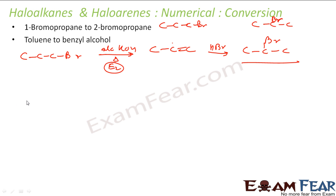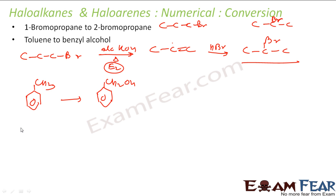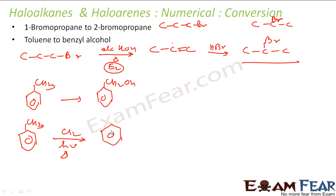Next: convert toluene to benzyl alcohol (CH2OH). We can't directly replace H with OH, so we first convert the CH3 group to CH2Cl using Cl2 in sunlight — this is a free radical reaction. One hydrogen is replaced by chlorine to give benzyl chloride (CH2Cl).